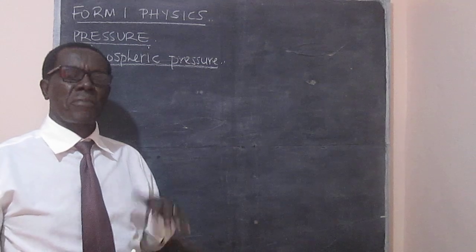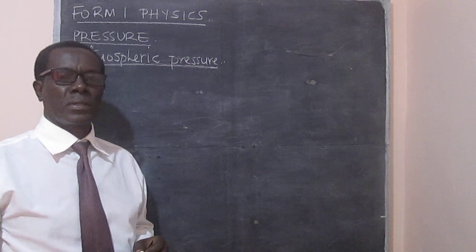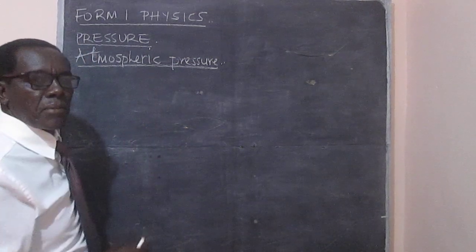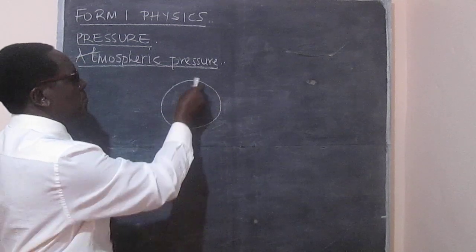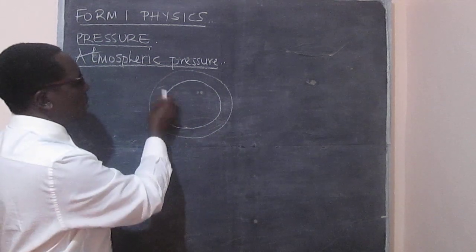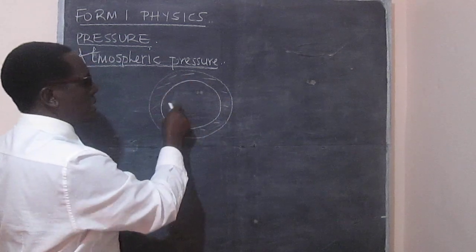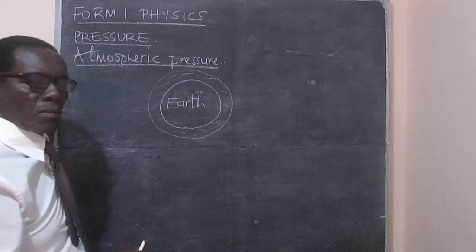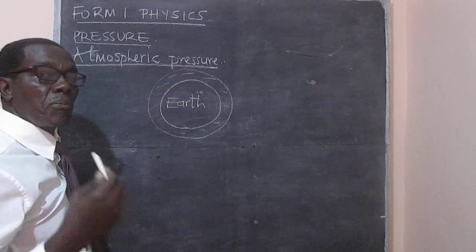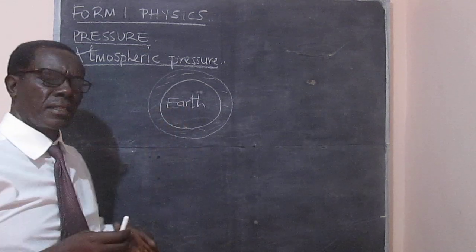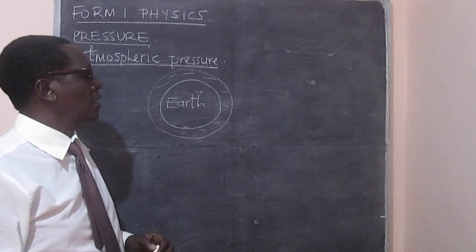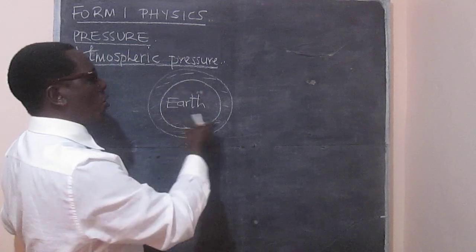As we move from the surface of the Earth upwards, if we think of the Earth as a sphere, around the Earth we have what we could call a layer of gases. Just like the pressure experienced by a person who is swimming in water or in a liquid, we are also in a sea of air.